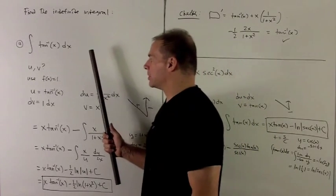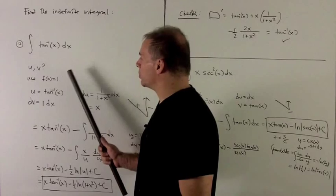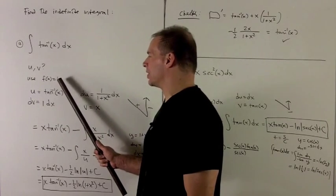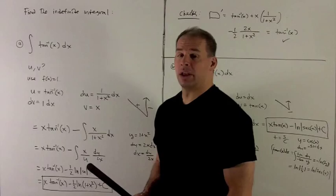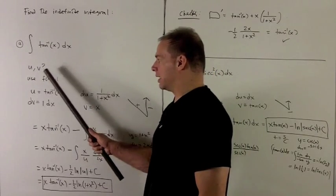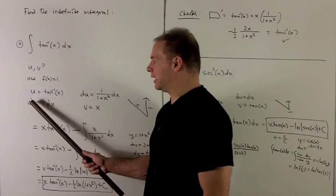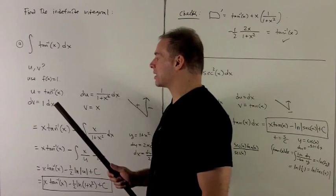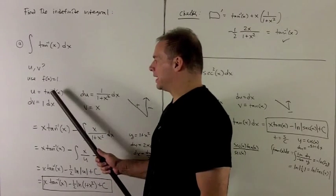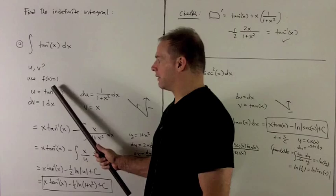So let's think about what happens here. Well if I'm using one, taking the derivative of that, it's going to give me zero. That's not going to help us at all. So that's going to be the function that I want to take the integral of. So we're going to let dv be equal to one dx.